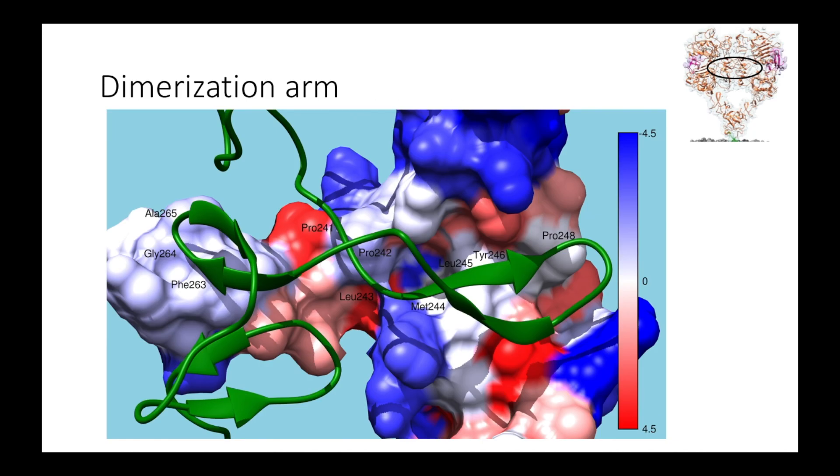The dimerization arm itself forms an interesting hydrophobic interaction with its partner. Hydrophobic molecular surface can be seen in red and hydrophilic in blue. The labeled residues are on the green ribbon. We can see hydrophobic residues of one arm associated directly with the hydrophobic surfaces on the other: phenylalanine, glycine, alanine, proline, proline, leucine, methionine, leucine, tyrosine, proline.